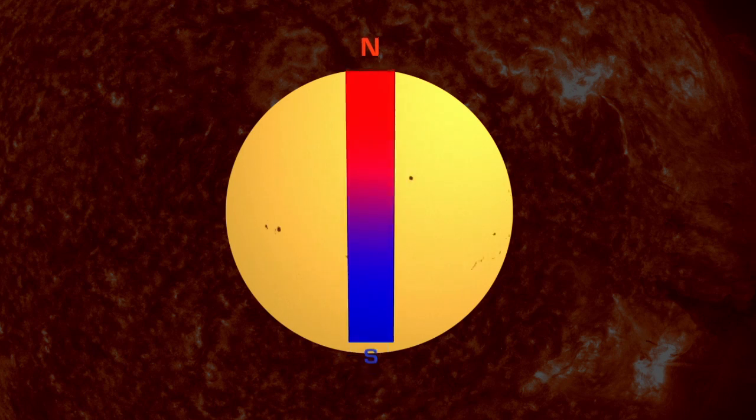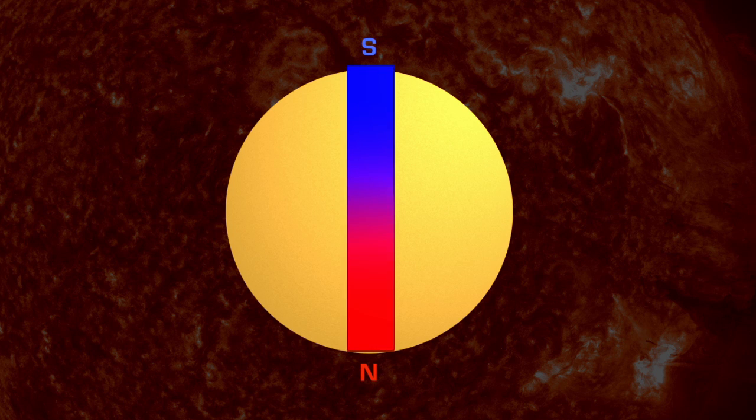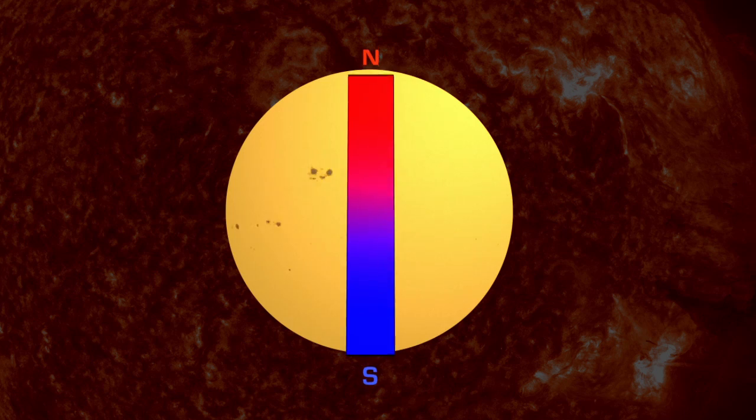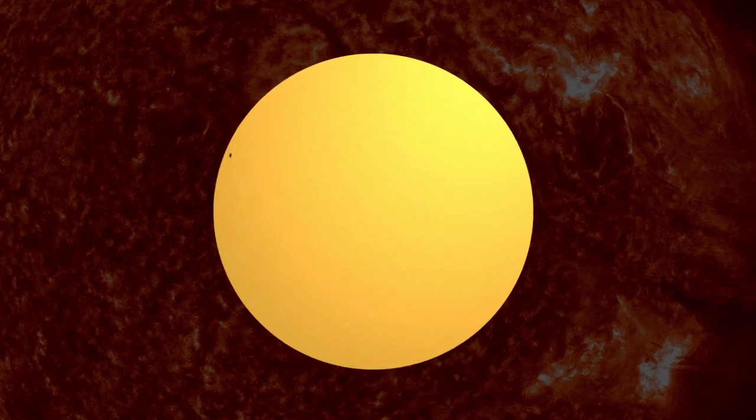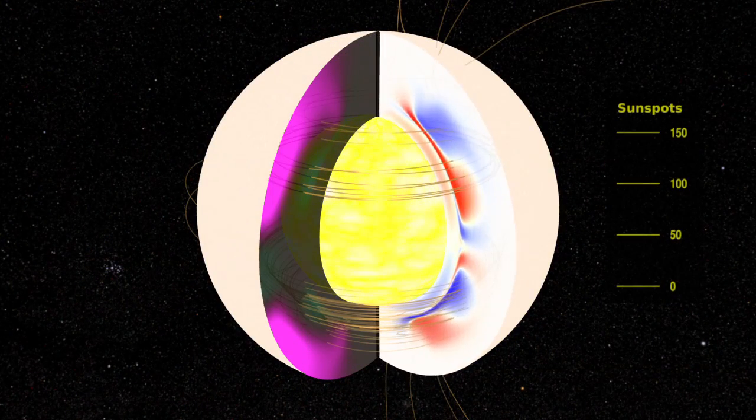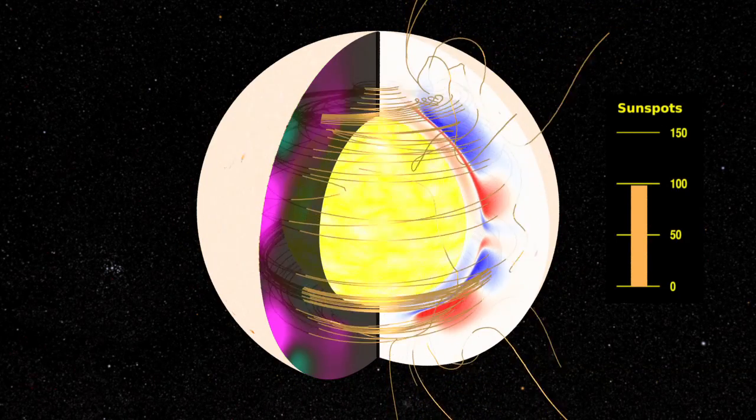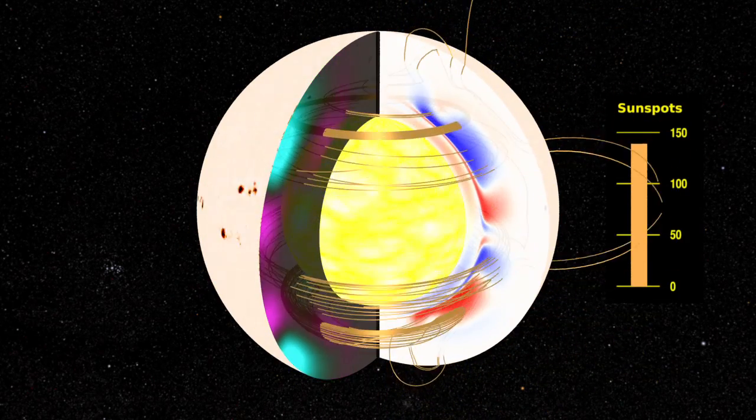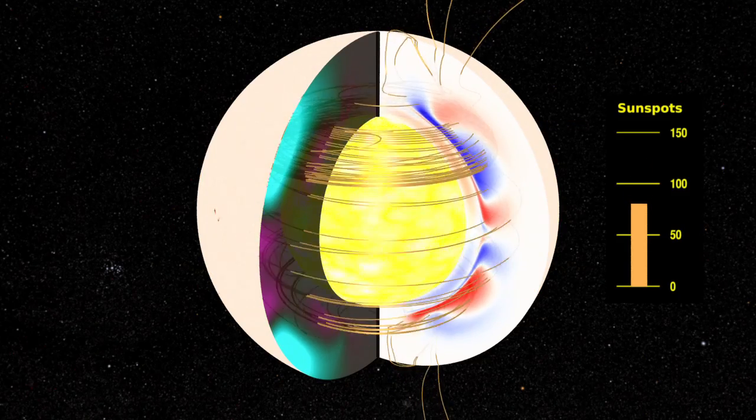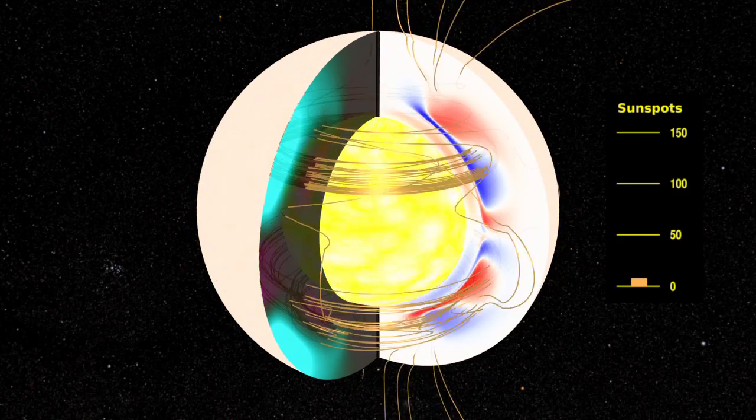Every 11 years, the Sun's poles flip. North becomes south, and south becomes north. So every 22 years, the poles return to the position where they started the cycle. The flip is due to the complex movement of magnetic fields inside the Sun that are constantly stretching, twisting, and crossing as solar material bubbles up from the Sun's core. But the exact pattern of movements is not yet mapped out.